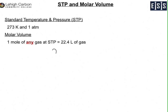Let's say they gave you in your problem that you had two grams of helium and you also had two grams of neon, and they asked you to calculate the volume at STP for these two gases.